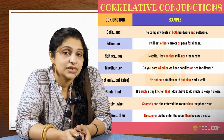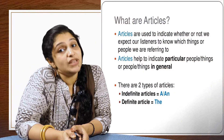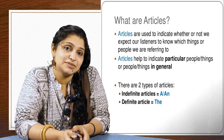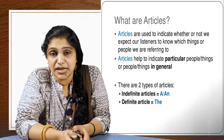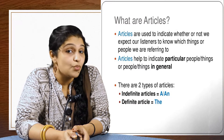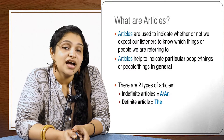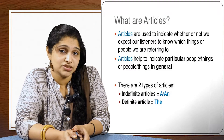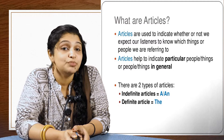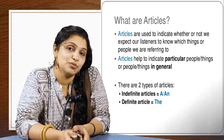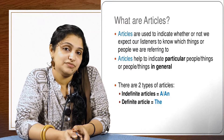We move on to the last category of words. Parts of speech are usually numbered as eight: nouns, pronouns, verbs, adverbs, adjectives, prepositions, interjections, and conjunctions. But we do have one more important group — a small group of just three particles: A, An, and The. The articles.